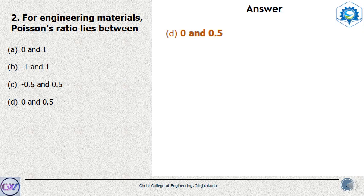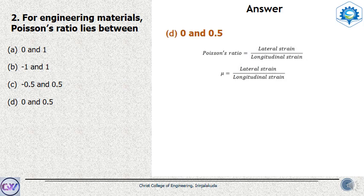Before moving to the next question, let's look at some theory of Poisson's ratio. Whenever a material has a load applied, it undergoes deformation both in the longitudinal direction as well as the lateral direction. Poisson's ratio is the quantity which represents the amount of lateral strain compared to the longitudinal strain when the load is applied, and is given as the ratio of lateral strain to longitudinal strain.